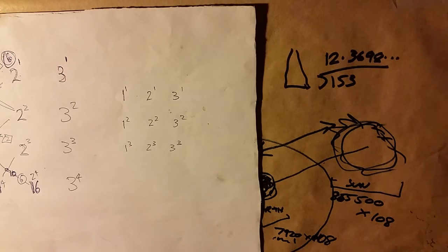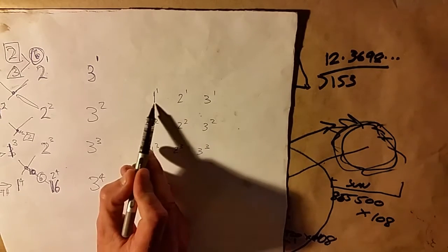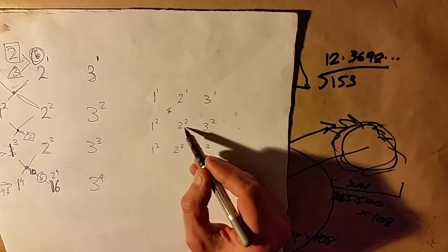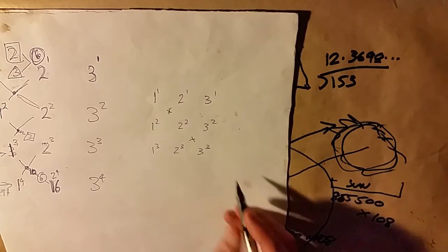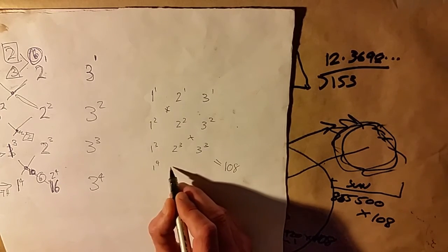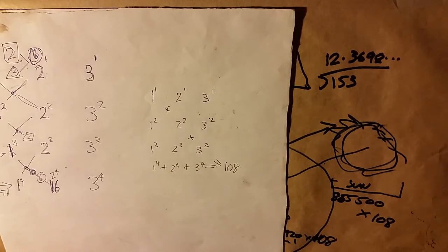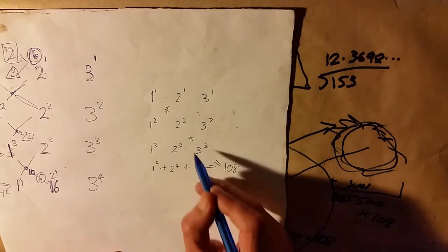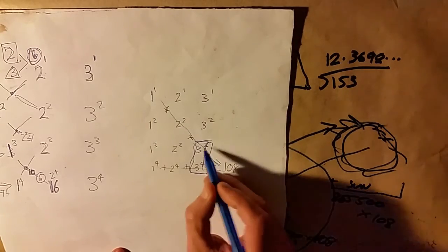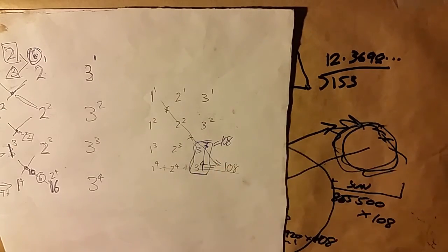I'll mention the number 108 and its different variations in measurement and symbology. If we draw a diagonal line multiplying one times two squared times three to the third, we get 108. Going across, if we put in one to the fourth, two to the fourth, and three to the fourth and add those numbers together, we also get 108. And three to the third plus three to the fourth is 27 plus 81, which is 108 as well.